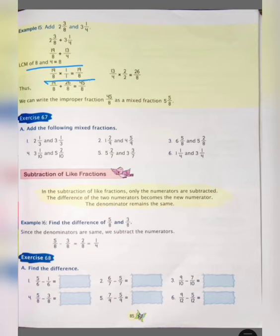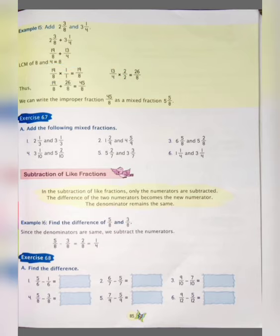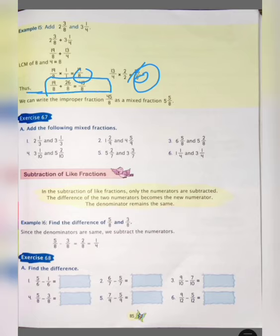19 upon 8 multiplied by 1 upon 1 is equal to 19 upon 8. Now, 13 upon 4 multiplied by 2 upon 2 gives us 26 upon 8. Now we have the same denominator. Thus, 19 upon 8 plus 26 upon 8 is equal to 45 upon 8.